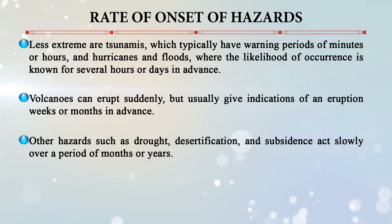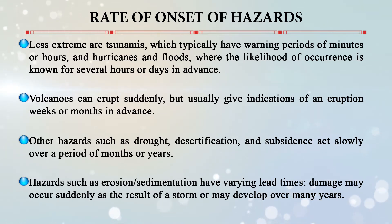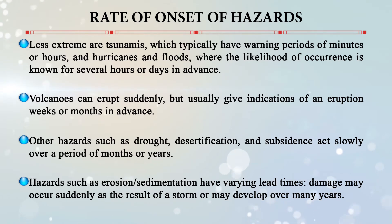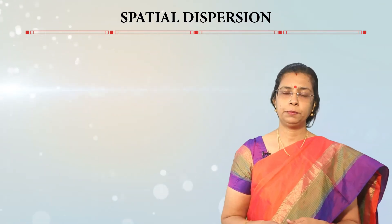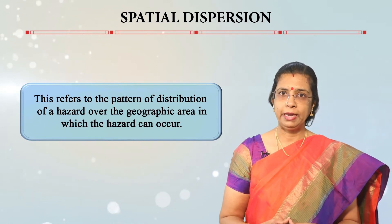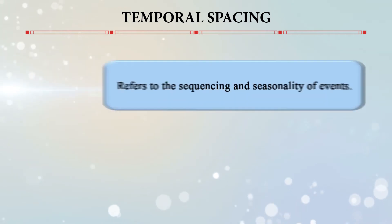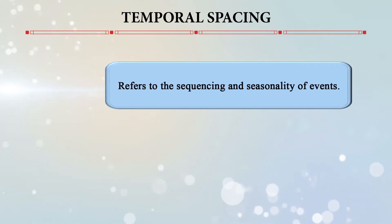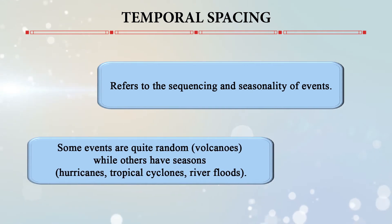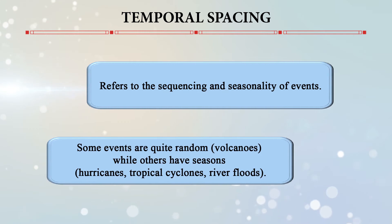Other hazards such as drought, desertification, and subsidence act slowly over months or years. Hazards such as erosion and sedimentation can have varying lead times, with damage occurring suddenly or developing over many years. Spatial dispersion refers to the pattern of distribution of a hazard over a geographic area. Temporal spacing refers to the sequencing and seasonality of events — some events like volcanic eruptions are random, while hurricanes, river floods, and tropical cyclones are seasonal.